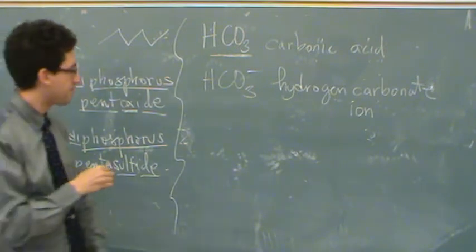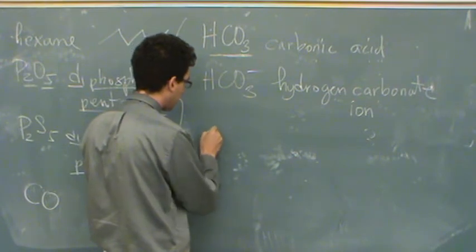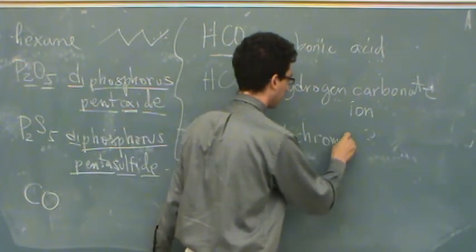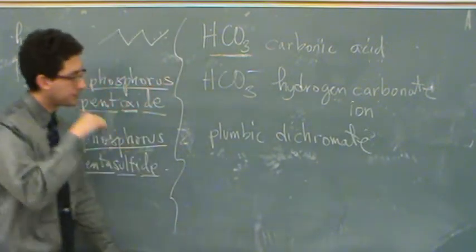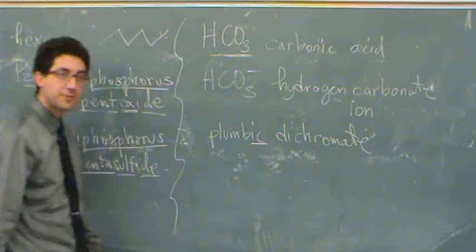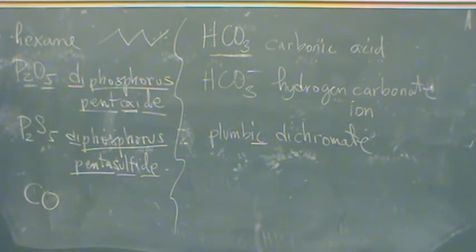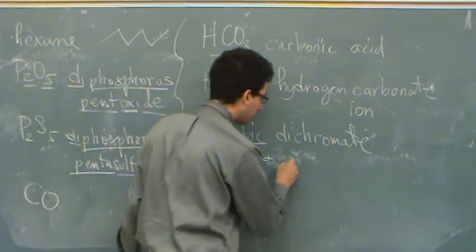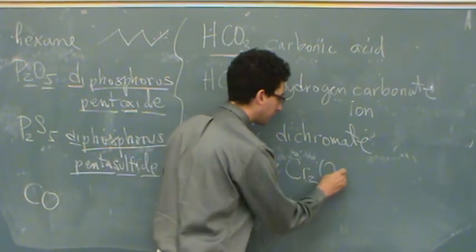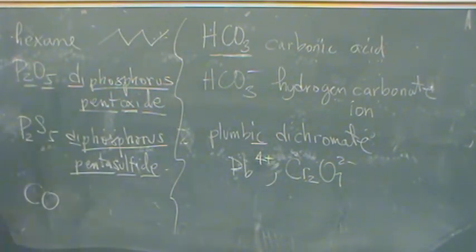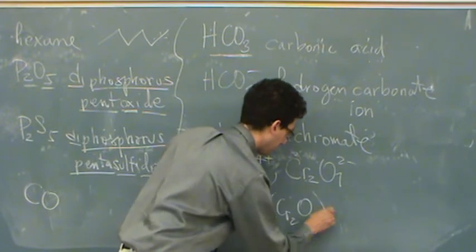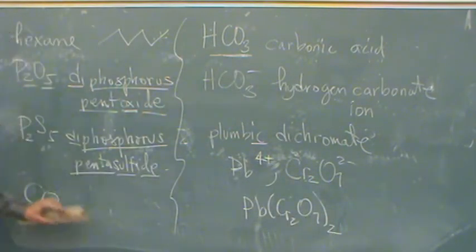How about plumbic dichromate. So you see the plumbic, that means lead. Ick means the higher of the two charges for lead. So lead is two and? Four. Four, so it's four. So it's lead four plus. Dichromate, there's two chromates. The dichromate is the one with the two after the chromium. Cr2O7, two minus. So that means I'd need two dichromates for every lead in order to balance the charge and make it neutral. Cr2O7, two.